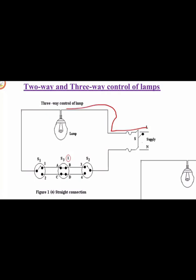In the straight connection, the line goes to the lamp, lamp to switch S1, S1 to S3, S3 to S2, and S2 to neutral. When S1 is at position one, connection goes one to terminal A, then A to B via the straight connection inside the intermediate switch, then B to three. If S2 is at position three, we have a closed path and the lamp glows — similar to the two-way lamp case.